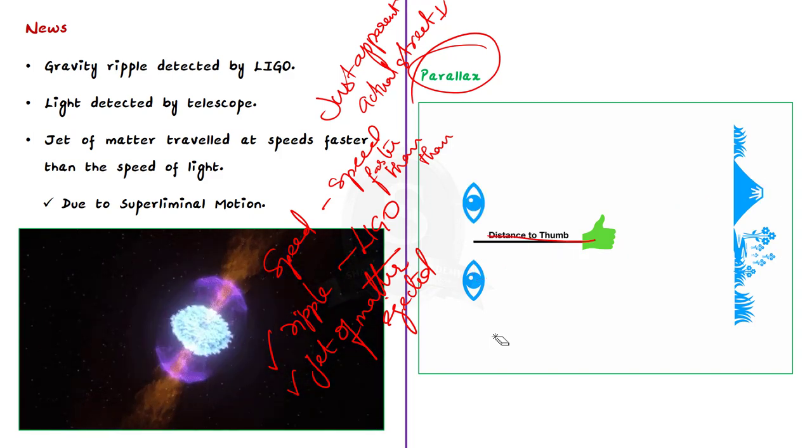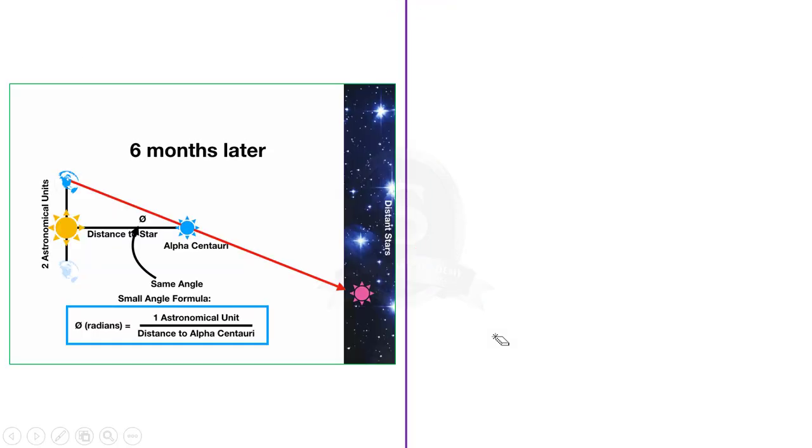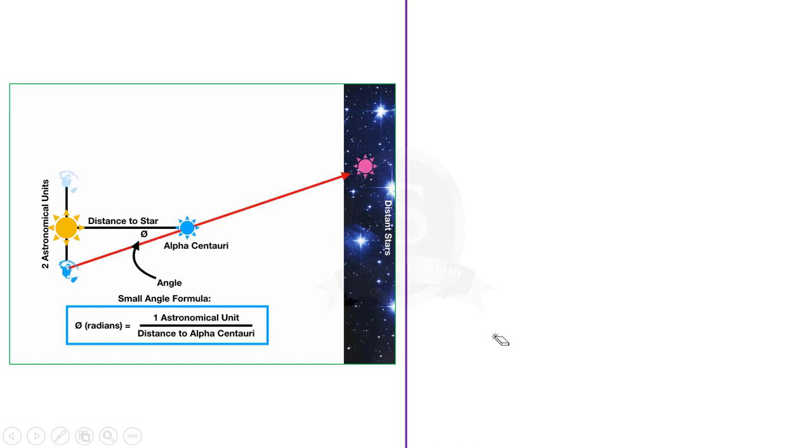By measuring this small change and knowing the distance between your eyes, you can calculate the distance to your thumb. That's trigonometry. When it comes to measuring distances to other stars, there are no two eyes that could do the trick. Instead, the orbit of Earth around the sun provides the baseline for these calculations.